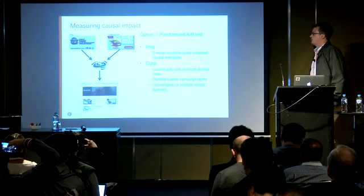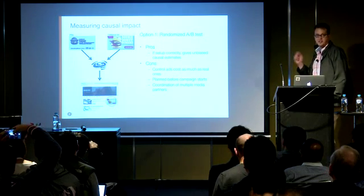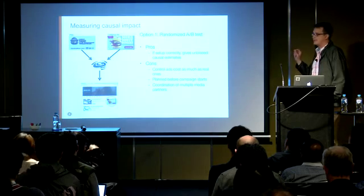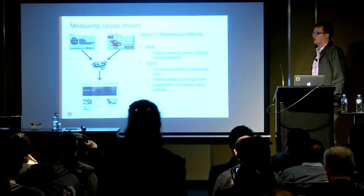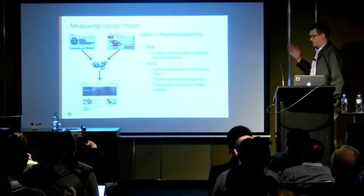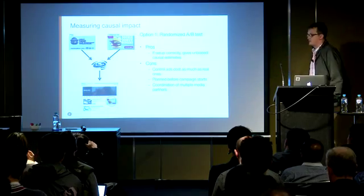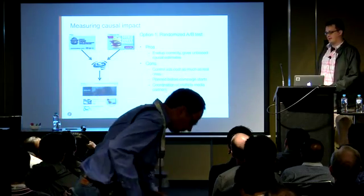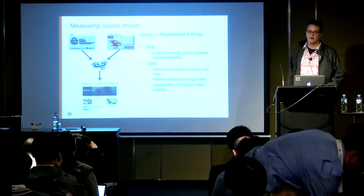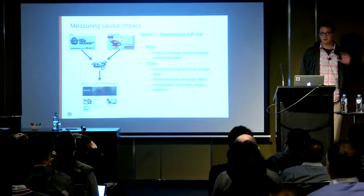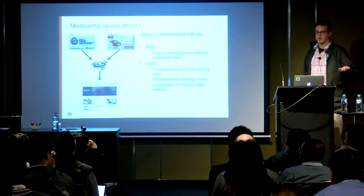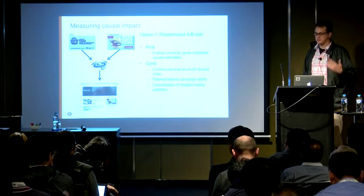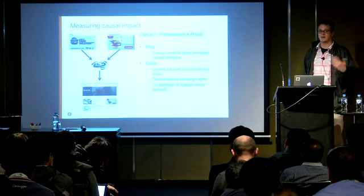A typical A/B test setup is: you're bidding on an exchange. If you win the bid, you flip a coin and decide — am I going to put that particular cookie in treatment or control randomly? If it's a treated individual, they get the ad. If it's a control individual, you send them a placebo, typically a public service announcement. However, the disadvantage is that you have to pay to place that placebo — you're putting content on a third party's website and they're going to make you pay. This makes the test rather expensive.